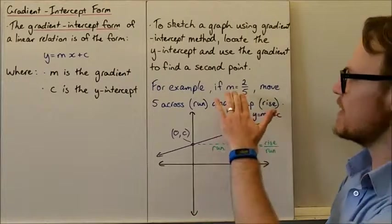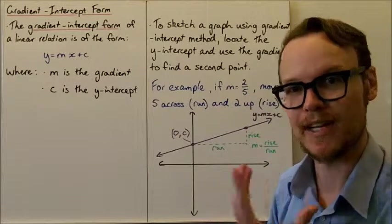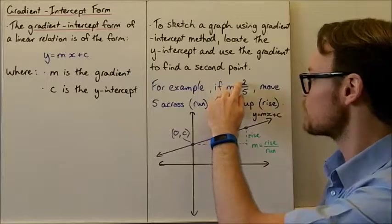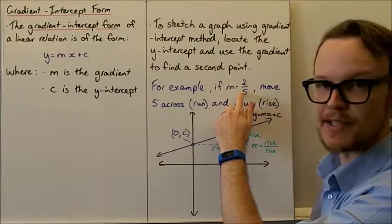For example, if m equals two-fifths, the gradient is two-fifths. Remember gradient is always rise over run, so the rise is going to be two, and the run is going to be five.